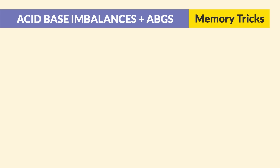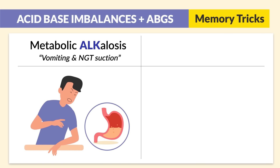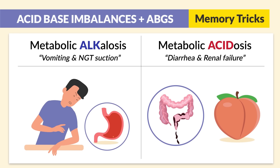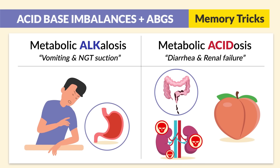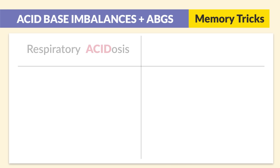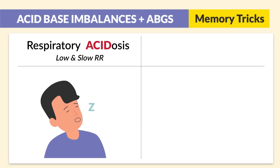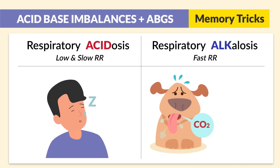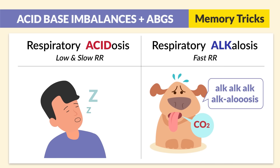Quick recap of memory tricks: metabolic alkalosis — vomiting out alkalosis. Metabolic acidosis — diarrhea, pooping out your acidosis; and renal failure, when kidneys fail, acid prevails. Respiratory acidosis — slow breathing, that acidosis. Respiratory alkalosis — fast breathing, hyperventilation, panting like a dog. Hulk, hulk, hulkalosis.